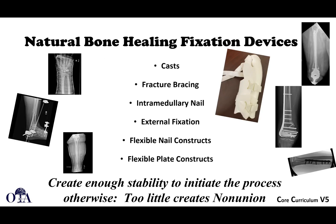If we think about secondary bone healing — calling it natural bone healing here — secondary bone healing is achieved with casts, fracture bracing or functional fracture bracing, intramedullary nails, which are a form of achieving relative stability, as well as external fixation and flexible plates and nails. A flexible plate means you're not trying to achieve compression and absolute stability, but instead doing bridge plating, which is a form of relative stability. You want to create enough stability to initiate the process, but if you have too little stability, you can potentially also have a non-union.